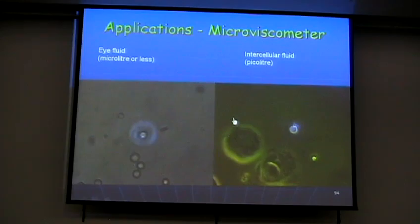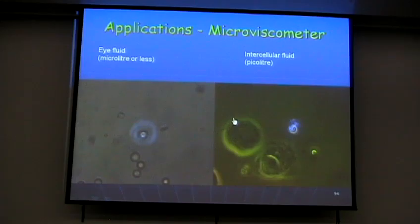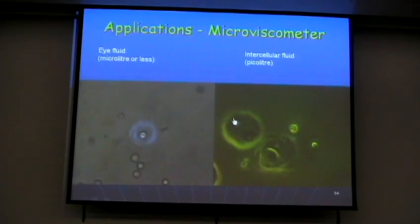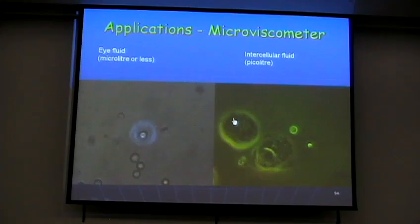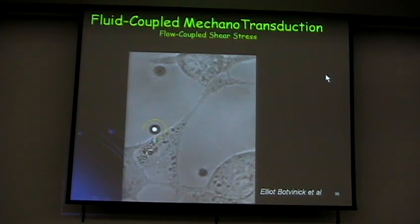I drill a hole with a blue laser and put my rotating particle — trapped in optical tweezers — inside that blade and rotate it. I can then determine the viscosity of the liquid between the membrane and the cell. This is intercellular fluid viscosity measurement produced with optical tweezers.